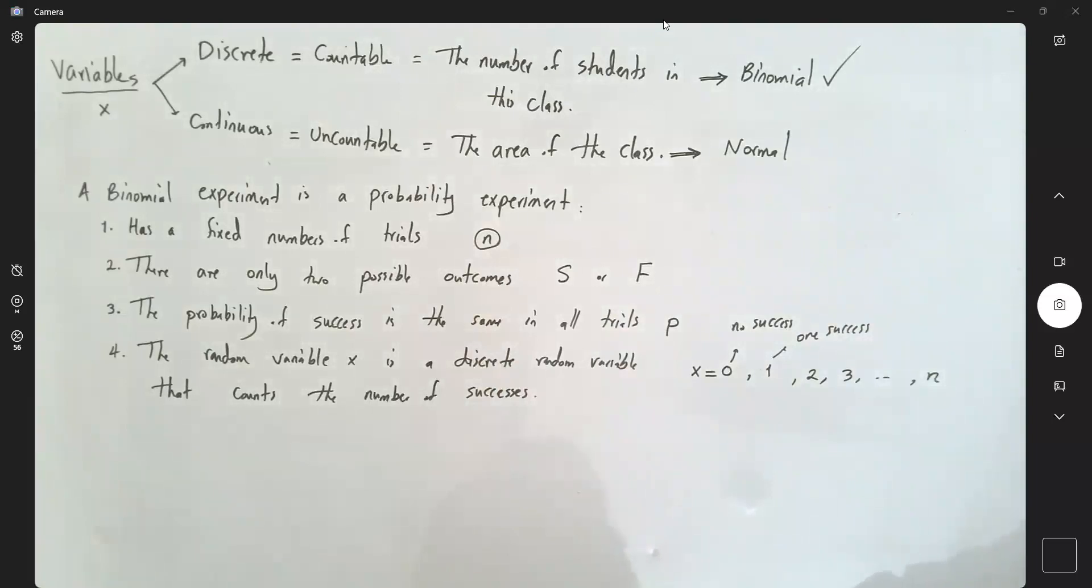So when it comes to binomial experiment, the formula for probability is the crazy looking formula: p of x, which is equal to n factorial divided by